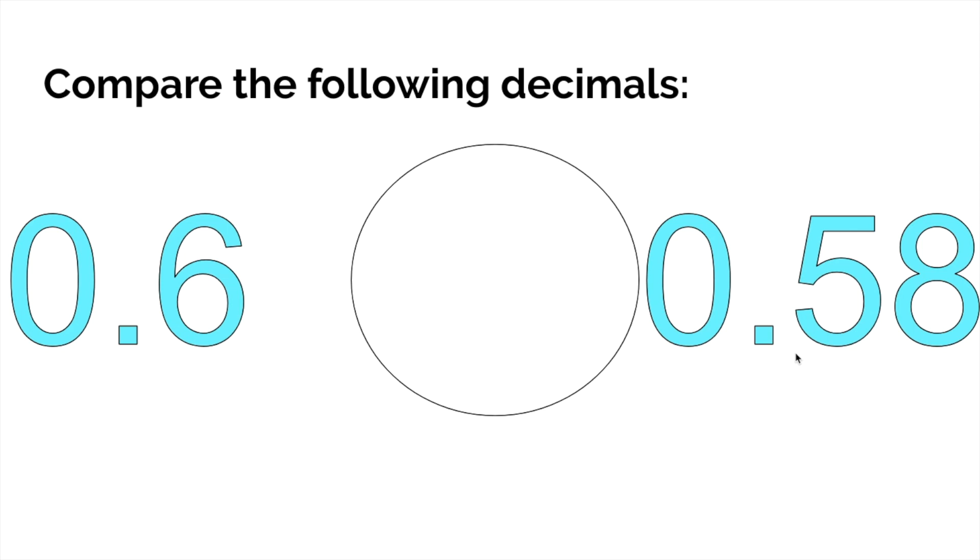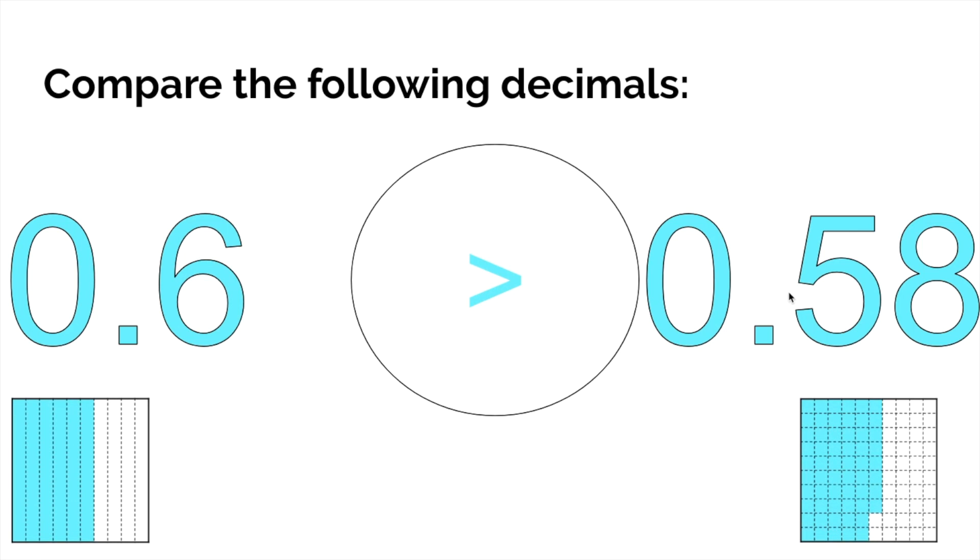Six tenths, five tenths—we're done. Six tenths is bigger than five tenths. Six tenths is greater than 58 hundredths because, remember, six tenths is equivalent to, yeah you know, 60 hundredths, and we know 60 hundredths will be bigger than 58 hundredths.